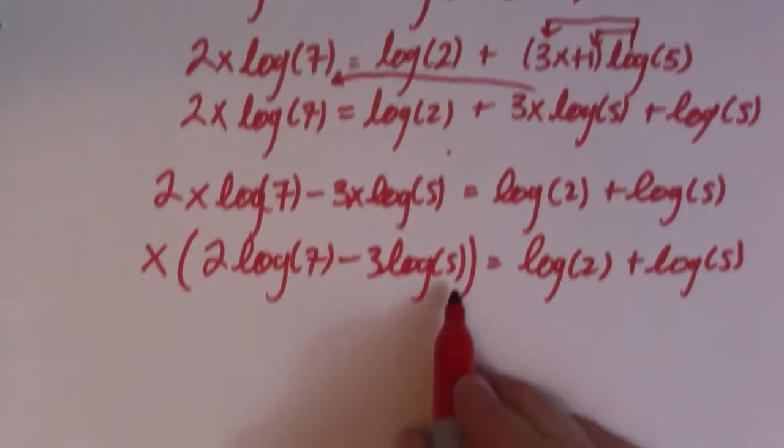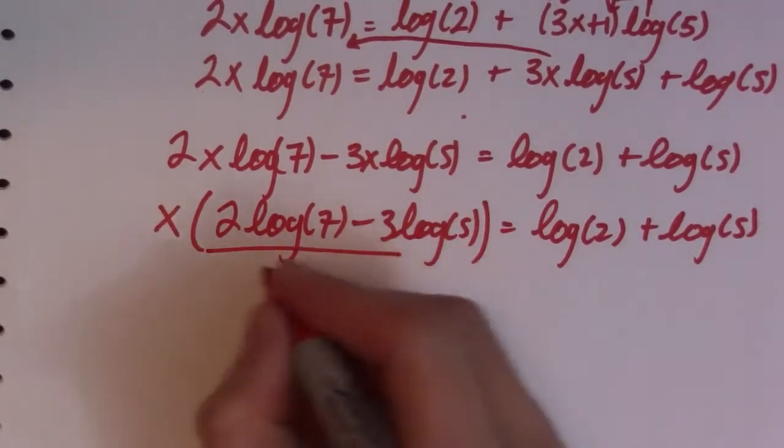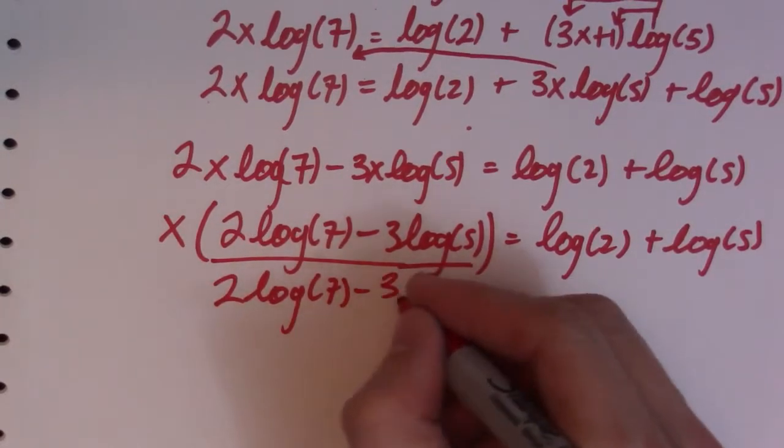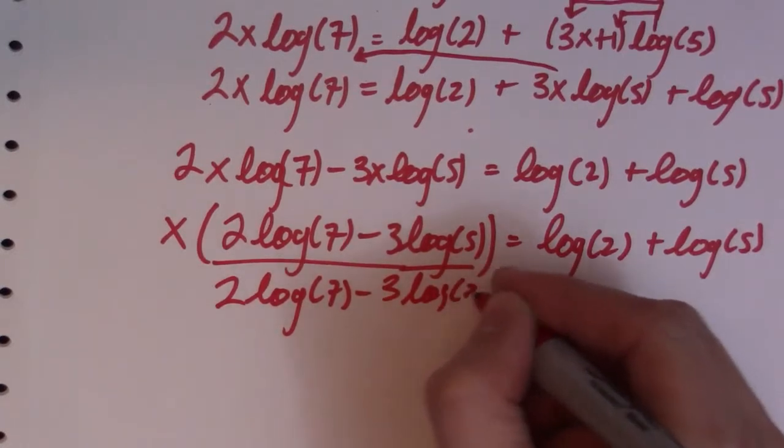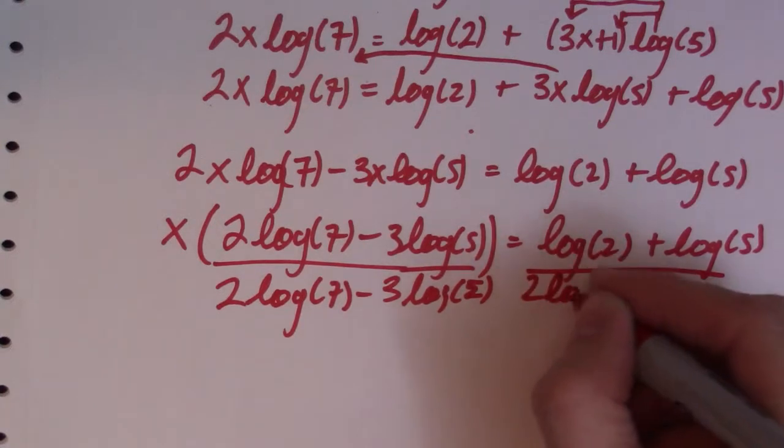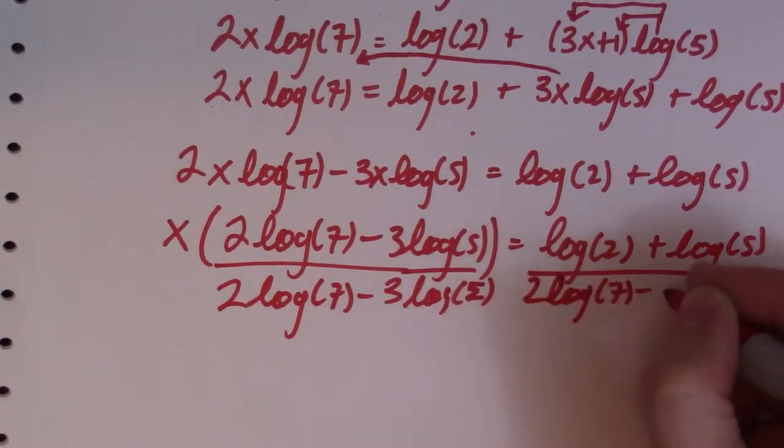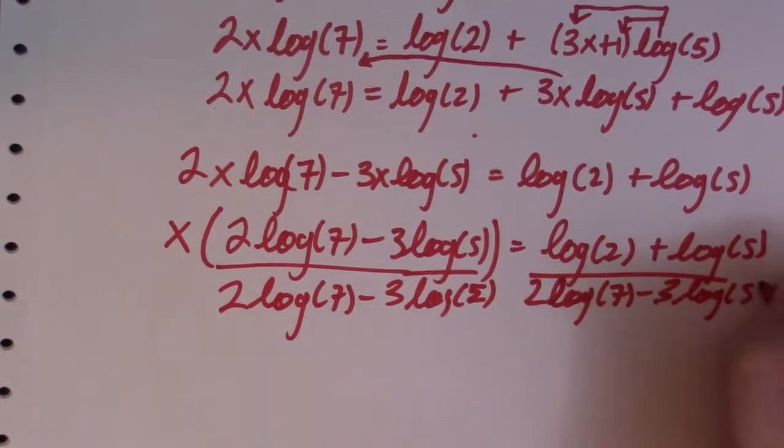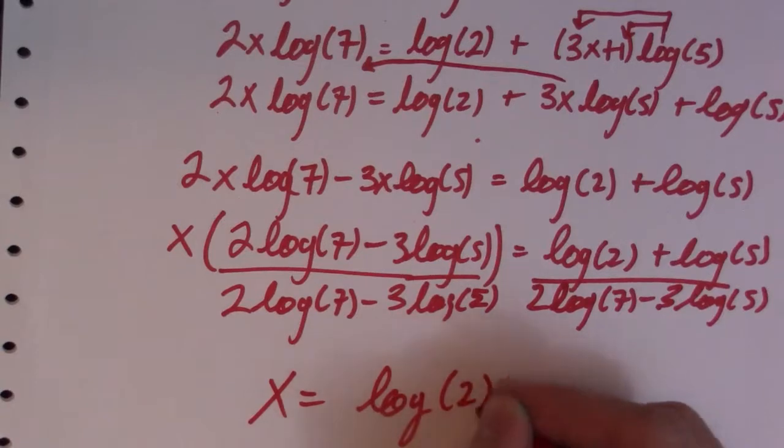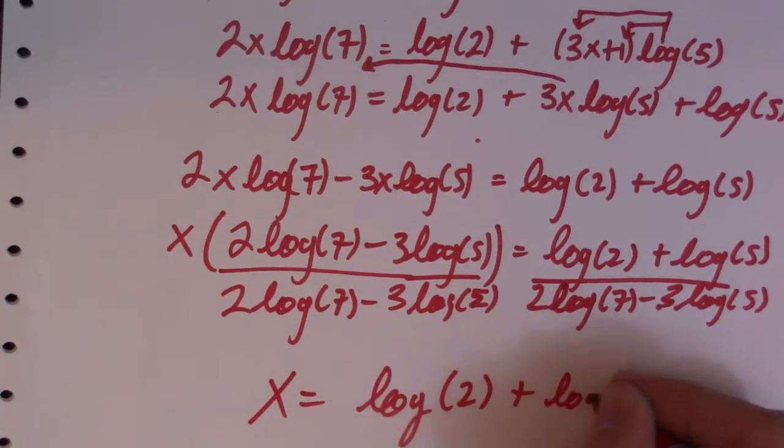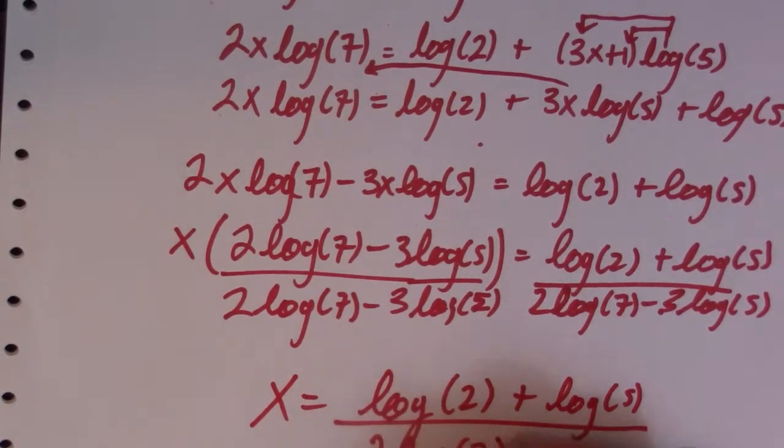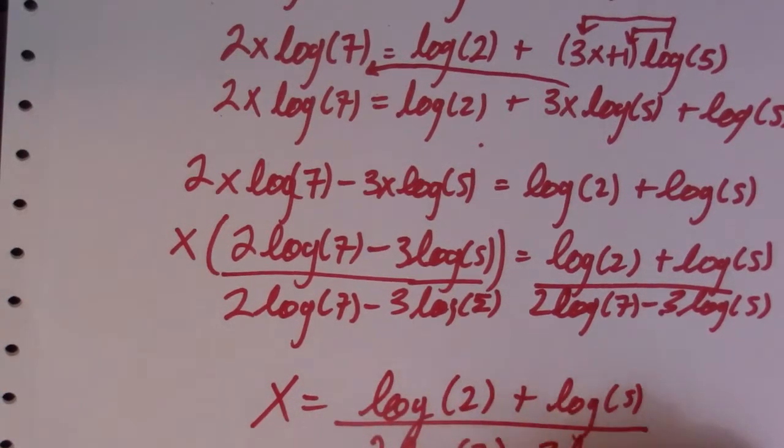Now I'll divide both sides by whatever I have in brackets here. So 2 log of 7 minus 3 log of 5. And that gives me x is equal to log of 2 plus log of 5. I'll divide it by 2 log of 7 minus 3 log of 5.